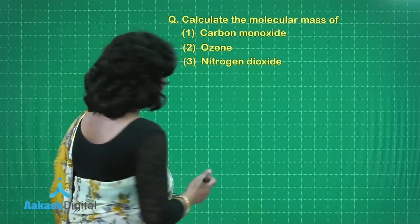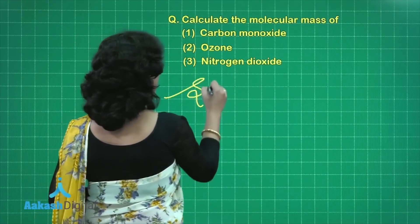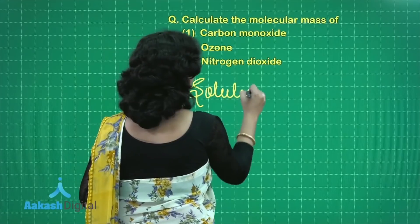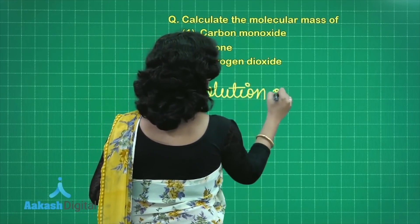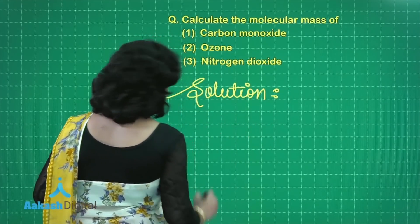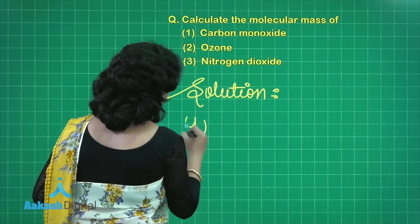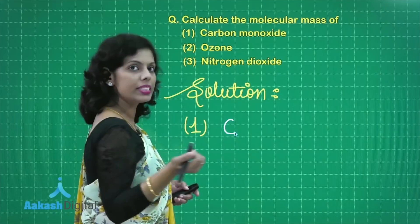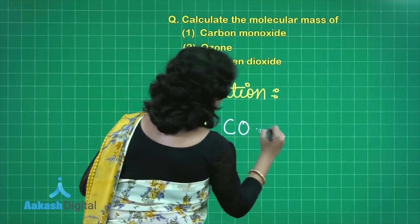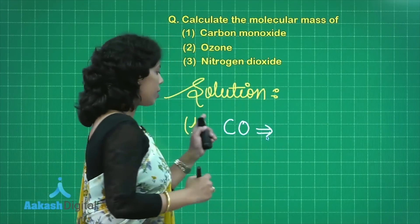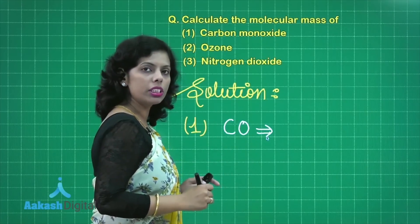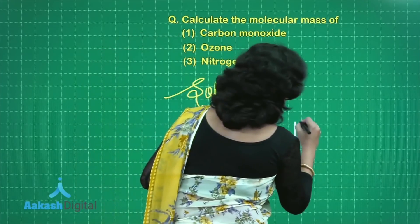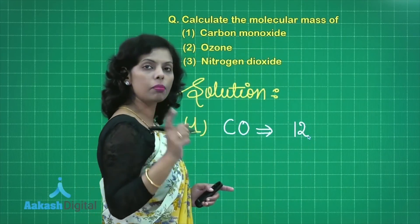Let us solve this question. First we have carbon monoxide, what's the formula? CO. This is carbon monoxide - one atom of carbon, one atom of oxygen. So atomic mass we'll take. We know that molecular mass can be calculated with the help of the atomic masses of the elements present in the compound.